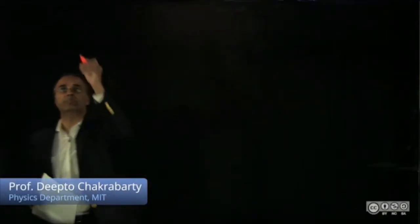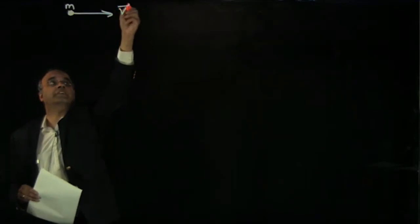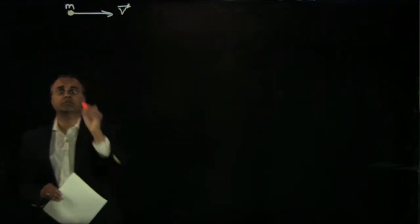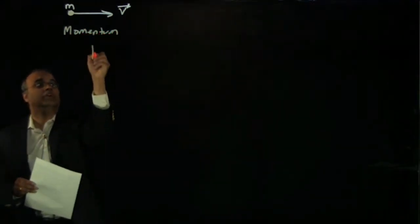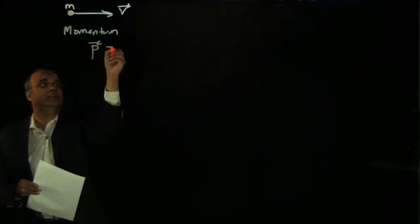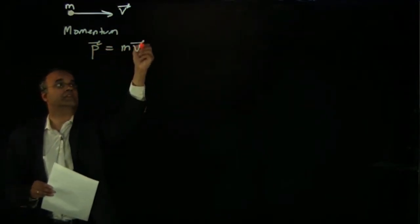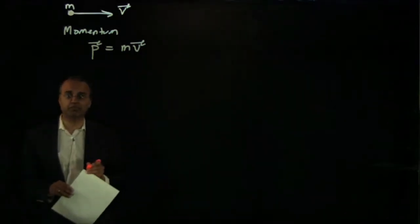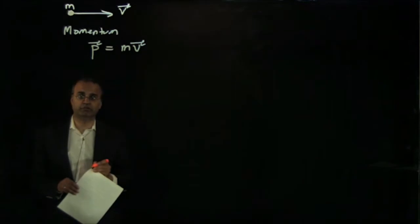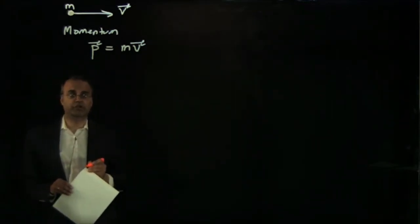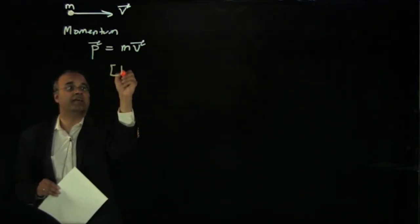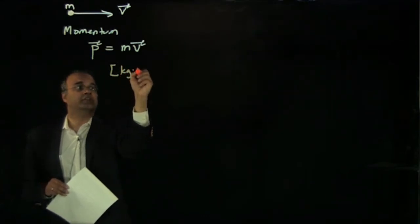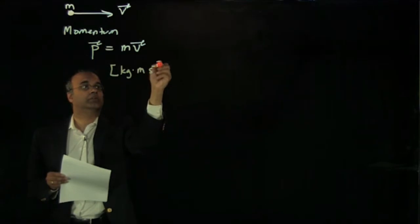Suppose we have a point mass particle of mass m moving with a velocity vector v. We can introduce a quantity we call the momentum of that particle, labeled with the symbol p, equal to the product of the mass times the velocity. Now let's think about the dimensions of momentum. Dimensionally, momentum has units of mass times velocity, so in SI units, the units of mass are kilograms and the units of velocity are meters per second.